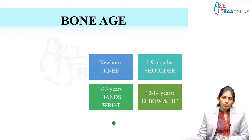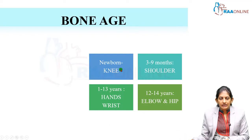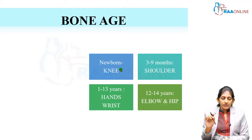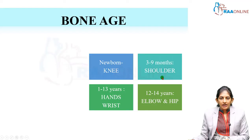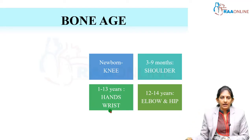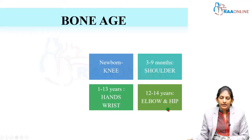To assess bone age, the X-ray site depends on the age. In the newborn, the knee is done because the proximal tibial and distal femoral epiphyses are the only ones present. Till one year, the shoulder is used. From one year up to 13 years, we do only the wrist — specifically an X-ray of the non-dominant hand. After 13 years, we do the elbow or the hip.